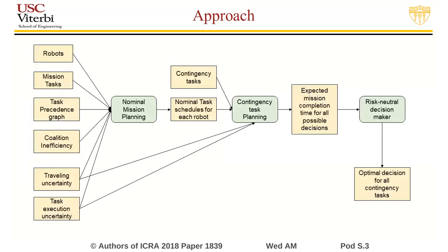For our proactive approach, the inputs are available robots, mission tasks, task precedence graph, and uncertainties associated with traveling and task execution. First, we generate a nominal mission plan. The system performs re-planning when a new potential contingency task is reported. The planner's reasoning process accounts for the probability of the potential contingency task to impact the mission tasks.